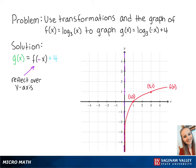So our new points are at negative 1, 0 and negative 3, 1. Connecting the points, we get the graph of f of negative x.